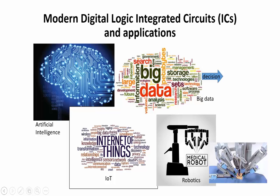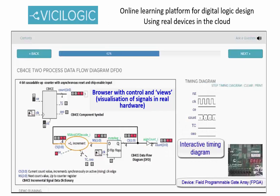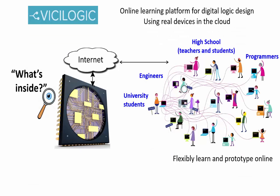Modern applications such as artificial intelligence, big data and social networks all execute on digital hardware devices. The ViciLogic user lesson browser configures an integrated circuit in the cloud, allowing you to control, probe and visualize signal behavior inside real hardware through a series of animated views.